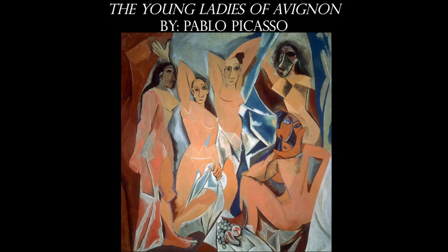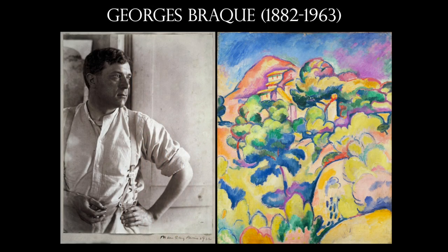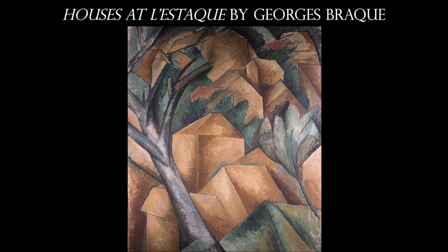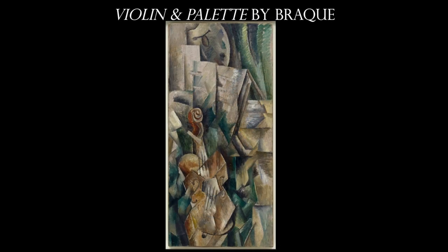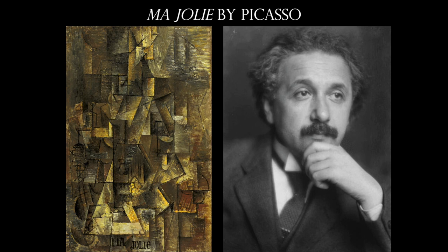One of the people who saw 'Les Demoiselles d'Avignon' was Georges Braque, who exclaimed that seeing it was like drinking kerosene and spitting fire. Braque had been a Fauvist in Matisse's camp but later became a Cubist. Both Picasso and Braque led the Cubist movement — it wasn't Picasso alone. Cubism deals with the breakdown of time and space, which parallels Einstein's theory of relativity introduced in 1905; Cubism followed in 1907–1908. Picasso and Einstein never met. 'Ma Jolie,' the painting at left, is the first painting to include words on its surface.